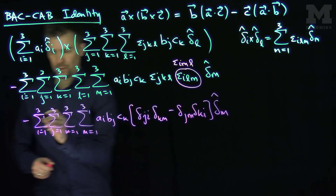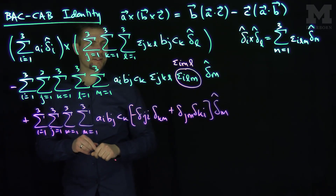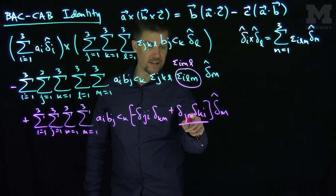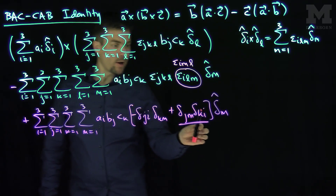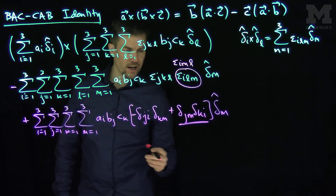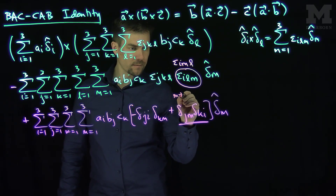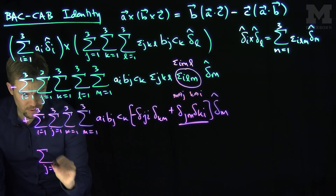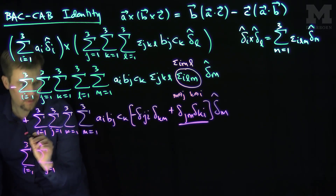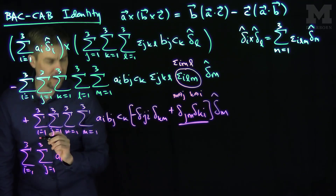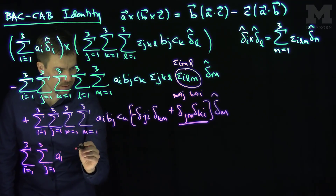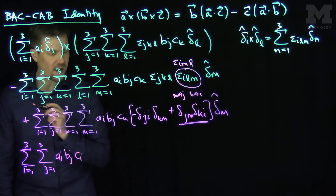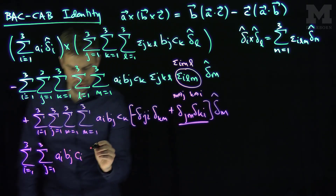We now have two separate sums. Taking the overall negative sign in and distributing, let's handle the positive terms first. For the positive terms, we keep indices i and j, replacing m with j and k with i. This gives the sum over j and i from 1 to 3 of a_i times b_j times c_i, in the direction of delta-j hat.